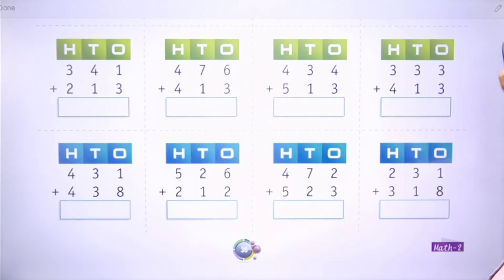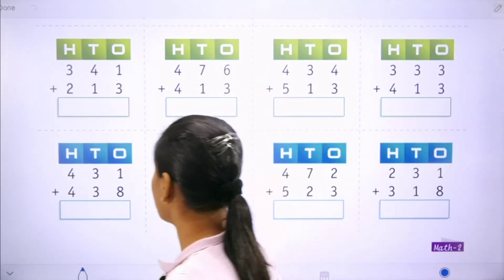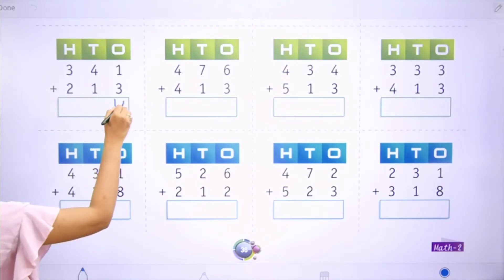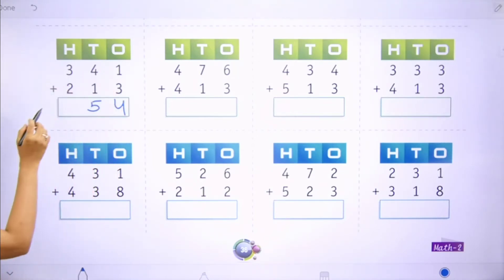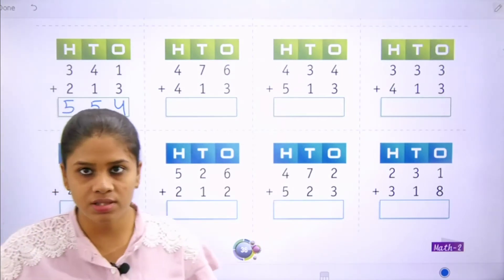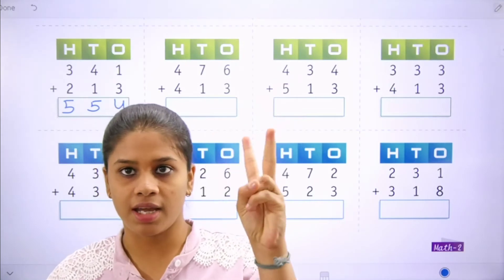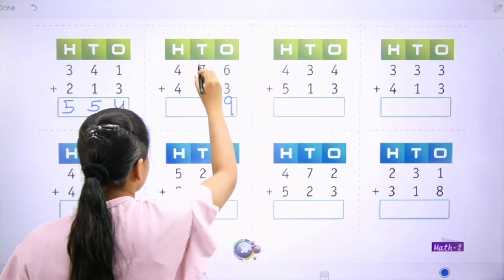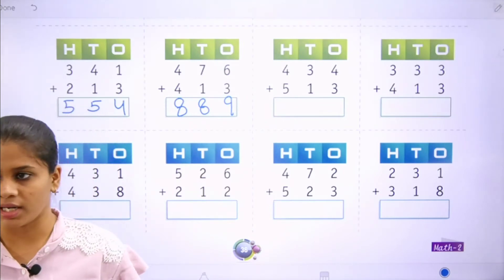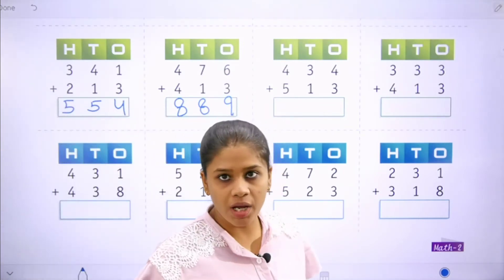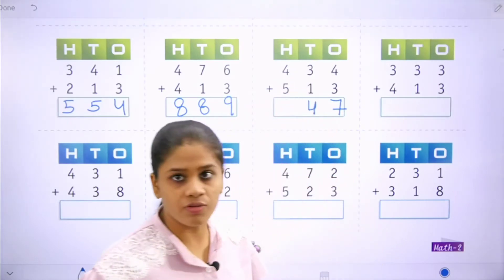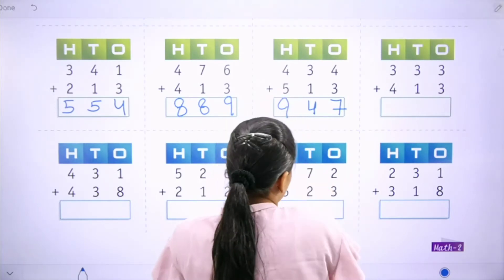Now move towards the next part. 1 plus 3 is 4, 4 plus 1 is 5, and 3 plus 2 is 5 — that is 554. Next: 6 plus 3 is 9, count forward: 7, 8, 9. 7 plus 1 is 8, 4 plus 4 is 8 — that is 889. Now move to the next: 4 plus 3 is 7, 3 plus 1 is 4, 4 plus 5 is 9 — that is 947.